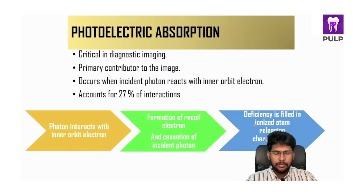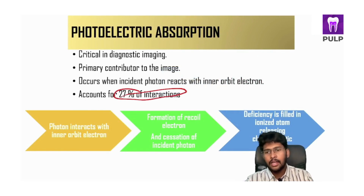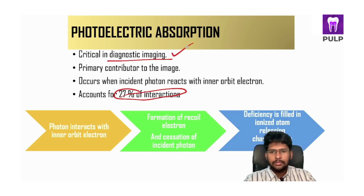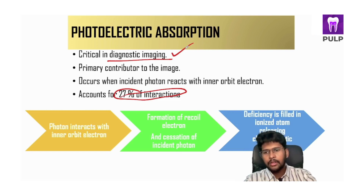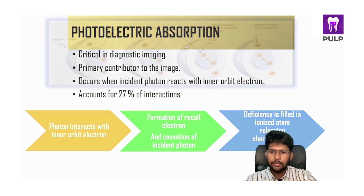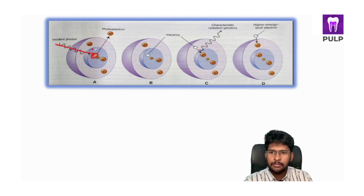When it comes to photoelectric absorption, it consists of 27% of the interactions and is very critical in diagnostic imaging — it is the primary contributor to the image. What happens here is the photon interacts with the inner orbit electron. The incident photon comes and hits this inner orbit electron.